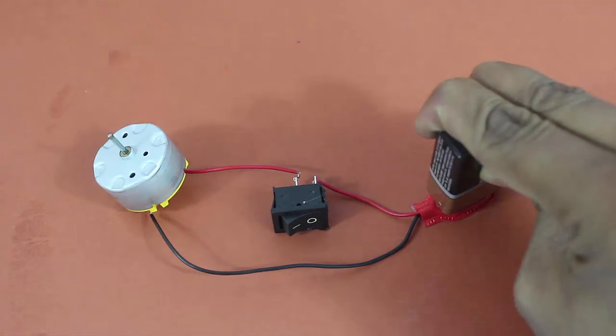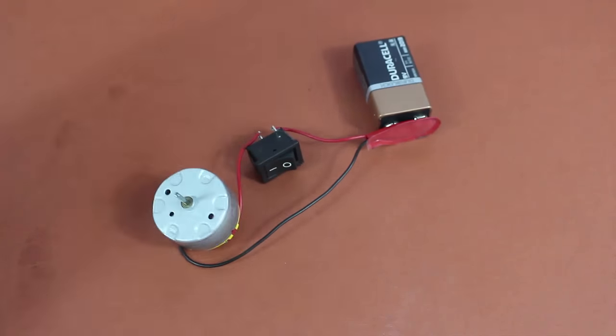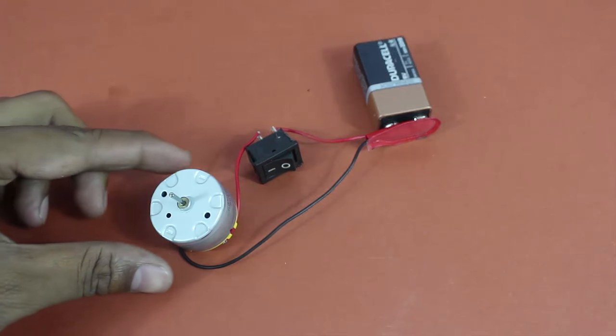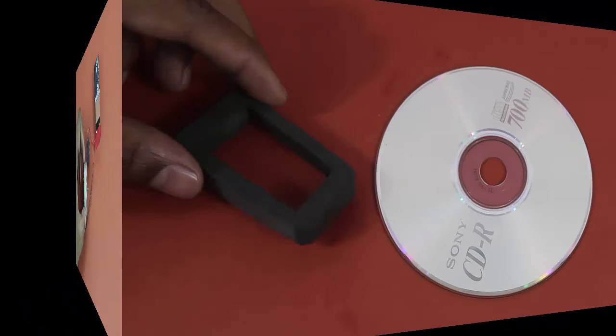Attach a 9V toy motor in series to a 9V battery and an on-off switch. On switching on, the motor will spin. You can perhaps only hear the sound but not see the spinning motor shaft.